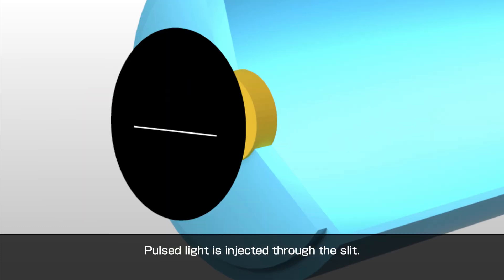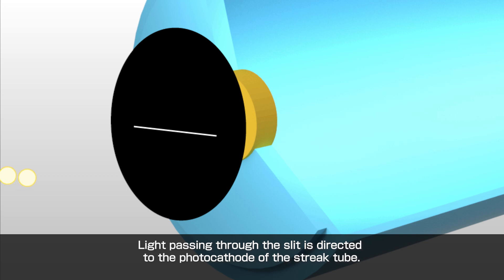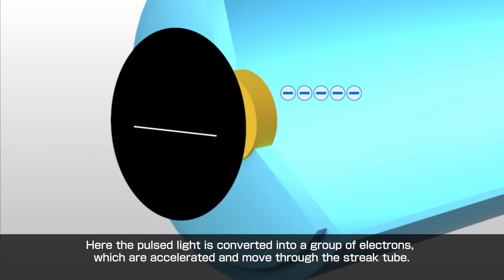Pulsed light is injected through the slit. Light passing through the slit is directed to the photocathode of the streak tube. Here the pulsed light is converted into a group of electrons, which are accelerated and move through the streak tube.